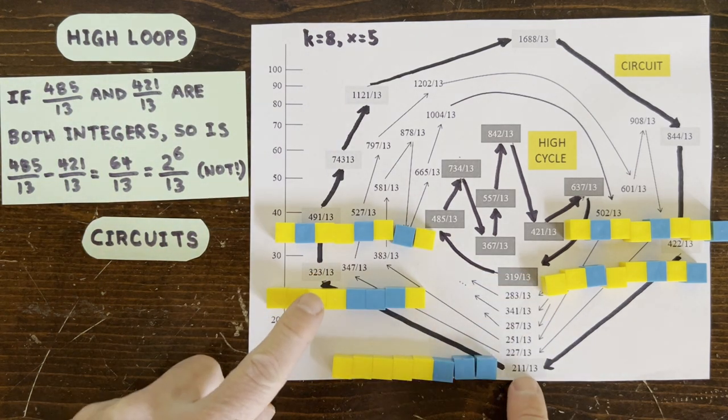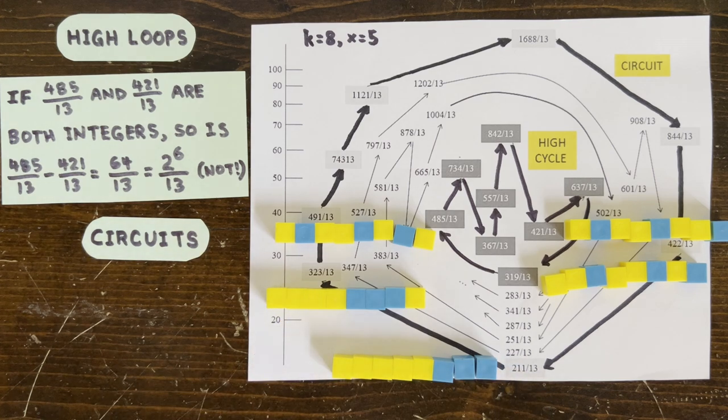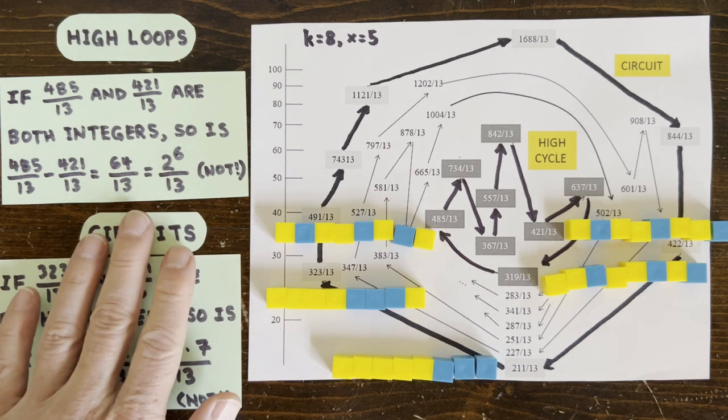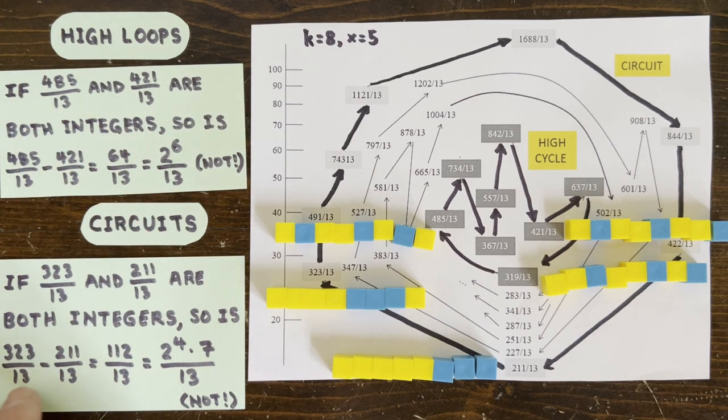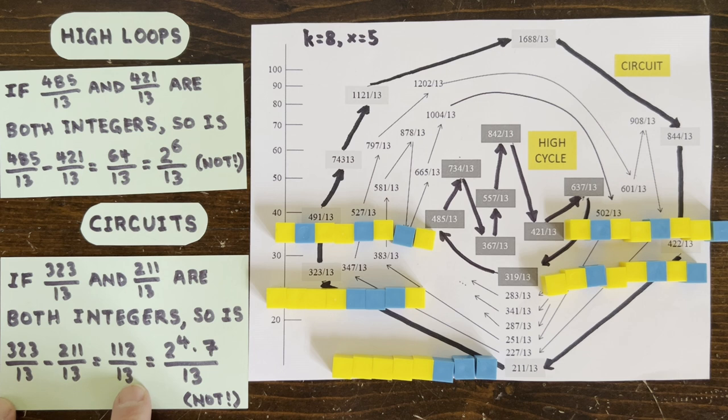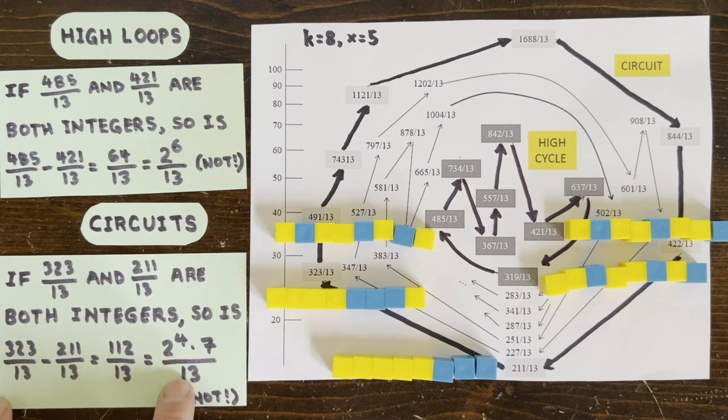If the first two members of the circuit loop were integers, then their difference would also be an integer. Here it's 323 over 13 minus 211 over 13, which is 112 over 13, which is 2 to the 4th times 7 over 13.